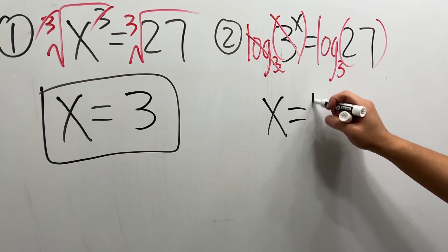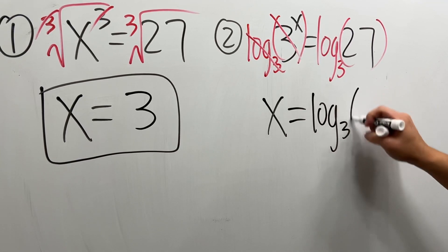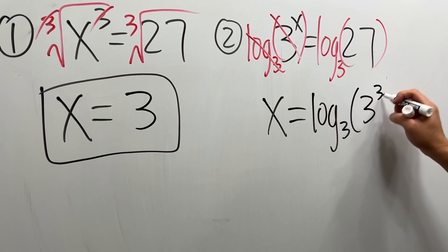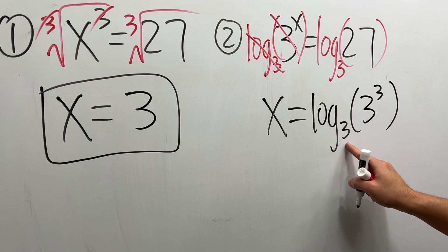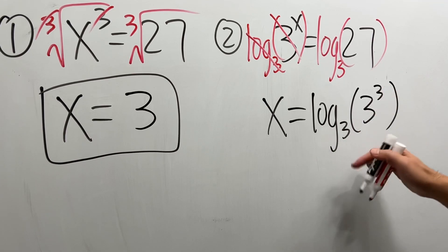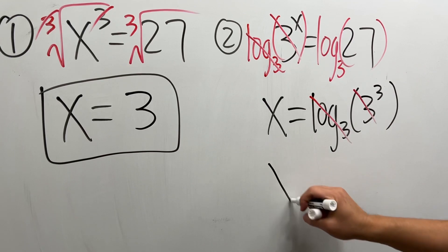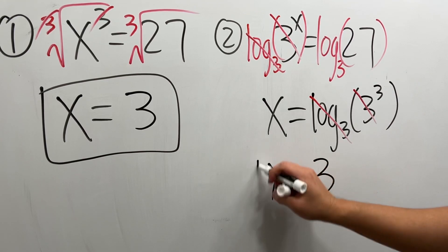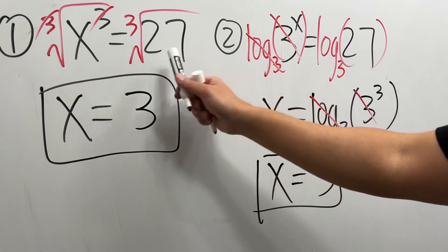Well let me show it this way: 27 is the same as 3 to the third power. When the base of the log and the base of the exponent right here is the same, they can cancel out so you also get 3, but make sure you know the correct steps.